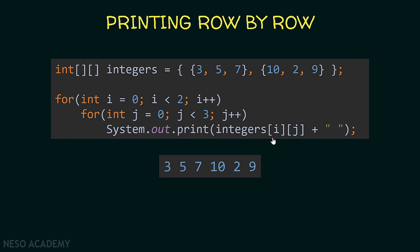So what's happening exactly? First, i is equal to zero, so we execute the inner loop: j starts at zero, j less than three, j++. We print integers[0][0] so three is printed. Then j++ makes j equal to one, so we print integers[0][1] and five is printed. i has not changed — we are still in the first row. Then j++ makes j equal to two, so we print integers[0][2] and seven is printed. When j++ is executed the condition becomes false, and we are done printing the first row.